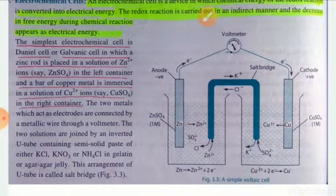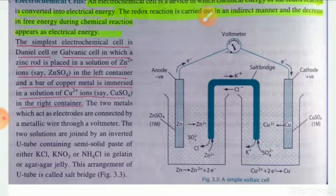The simplest example of an electrochemical cell is the Daniel cell or galvanic cell, in which a zinc rod works as the anode, placed in the solution of zinc ions in the left container, whereas the cathode electrode, that is copper, is placed in copper sulfate solution on the right side. Both vessels containing electrodes — the left vessel containing the anode electrode and the right vessel containing the cathode electrode — are connected with a voltmeter.